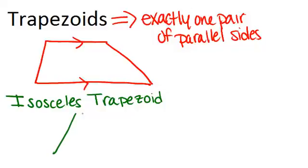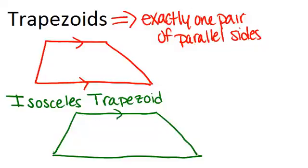Therefore, an isosceles trapezoid is a trapezoid where the non-parallel sides are congruent.